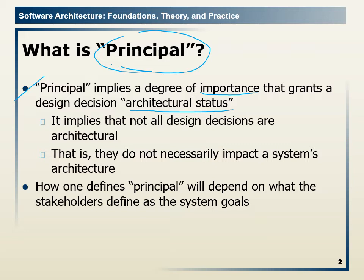Some of the things we thought about may be found irrelevant, meaning they have no architectural status. So principle design decisions are those which are important — they form the main part of architecture, the main part of our system and project being developed. This implies that not all design decisions are architectural.